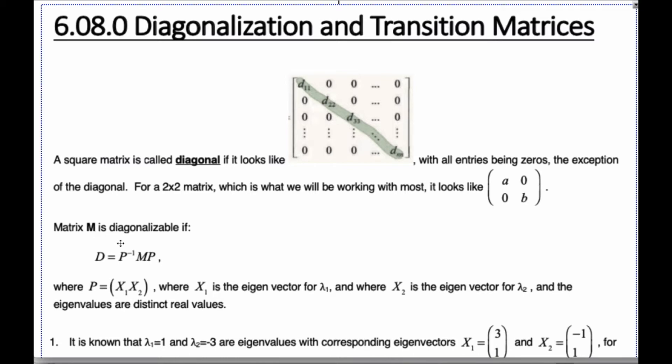And M is diagonalizable, hard to say, if this is true, where P consists of a two-by-two matrix in our case, where X1 is the eigenvector for the eigenvalue lambda 1, and X2 is the eigenvector for the eigenvalue lambda 2. And so these are eigenvectors, and they create the matrix P.